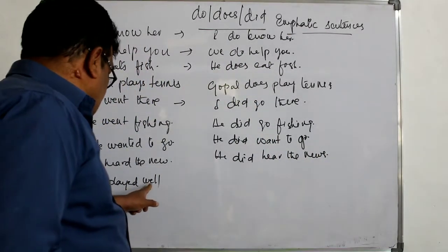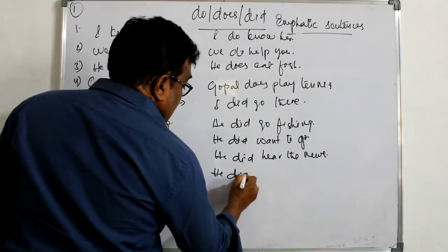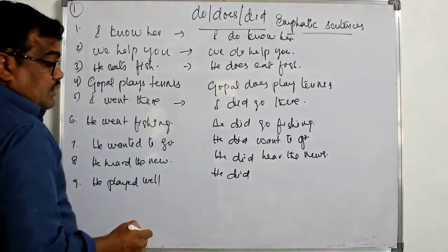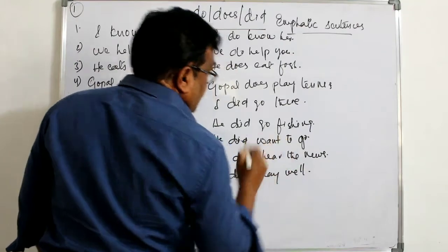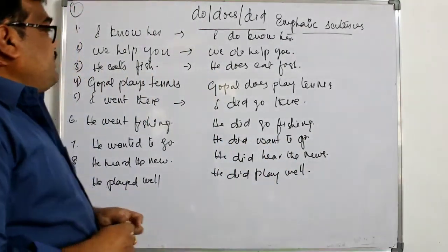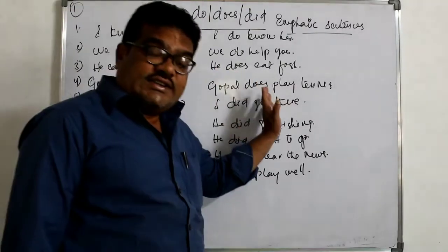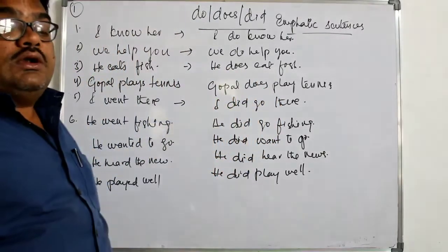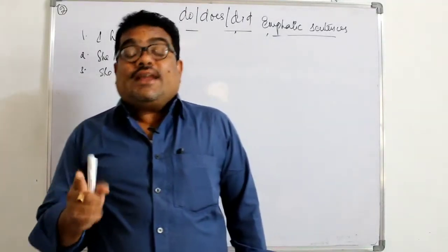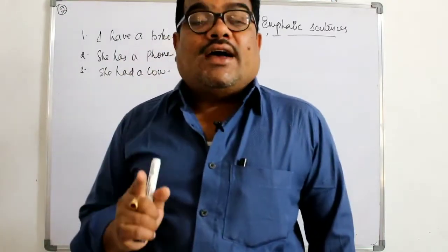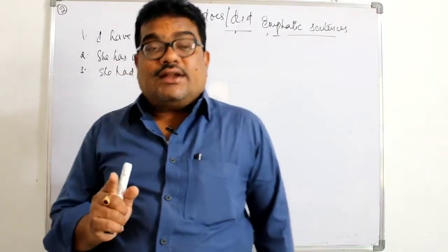The emphatic form of 'He heard the news' is 'He did hear the news.' Next: 'He played well' — this is also in past tense. The emphatic sentence is: 'He did play well.' I have taken simple present and simple past tense examples and changed them into emphatic sentences using do, does, and did.